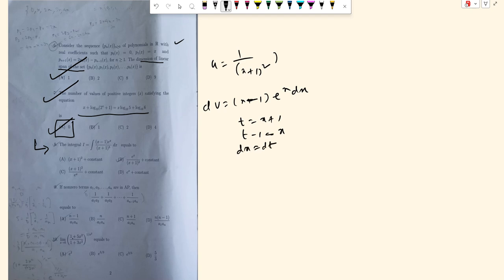So dx equals dt, and i equals the integral of (t minus 2) times e to the power (t minus 1) over t cubed dt.